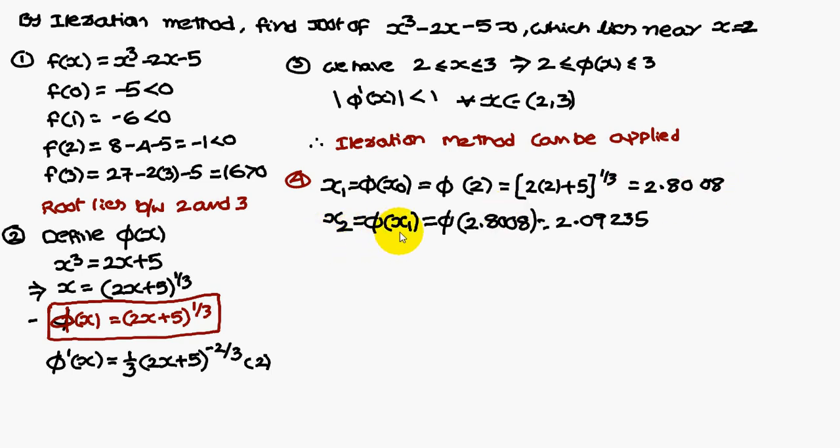x₂ equals φ(x₁). In place of x₁, 2.8008. Simplifying that one, you get 2.09235. x₃ is φ(x₂). x₂ is 2.09235. If you simplify, you get 2.09422.